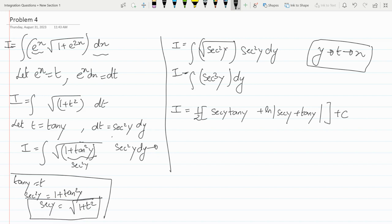So let's substitute that. So I becomes half square root of 1 plus t square times t plus ln modulus of square root of 1 plus t square plus t plus constant.